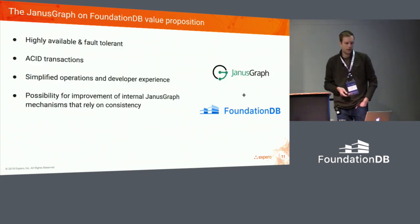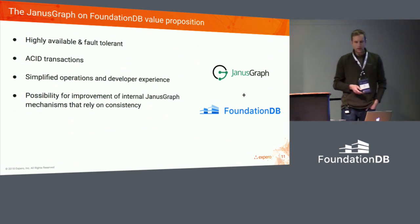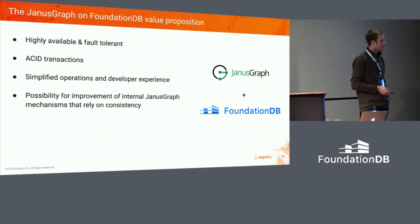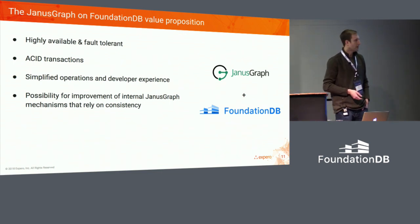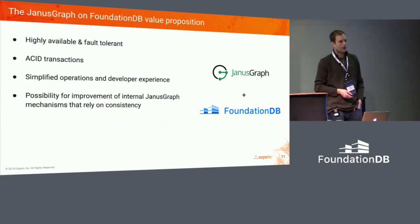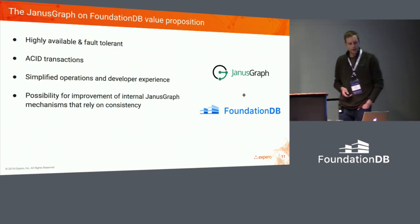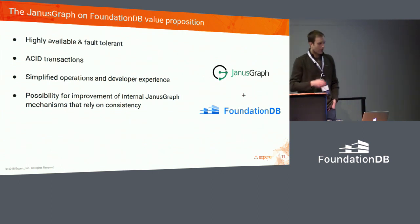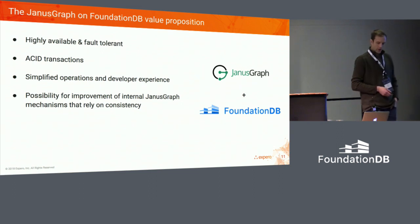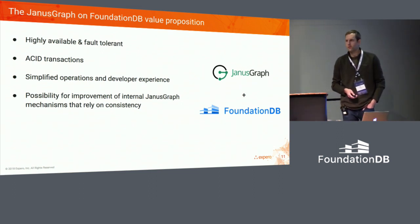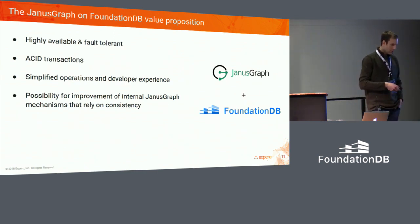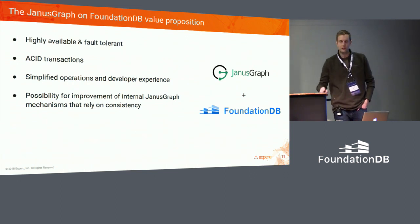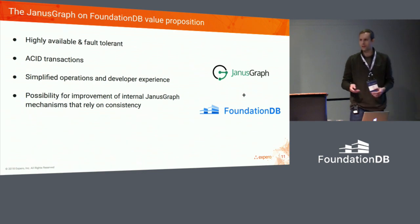So what is the JanusGraph on FoundationDB value proposition? When FoundationDB got open sourced, I was really excited because what JanusGraph was really missing was a distributed, highly available ACID storage option. You could run it on a single instance with BerkeleyDB, but there just wasn't anything distributed out there. So on the face of it we get high availability and fault tolerance. ACID transactions are a huge win. Overall, that pays off with simplified operations and developer experience. And there are things internal to JanusGraph that have had to compensate for eventually consistent stores — bespoke locking recipes and things that affect the end users' usage of the system.